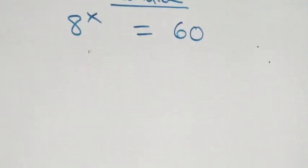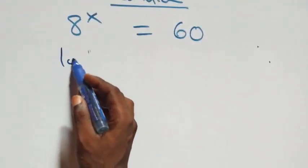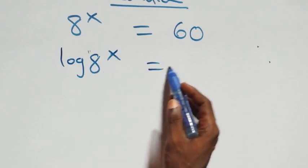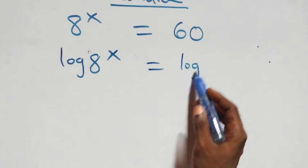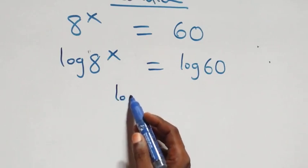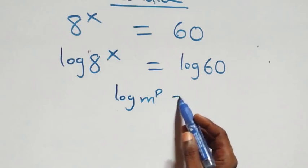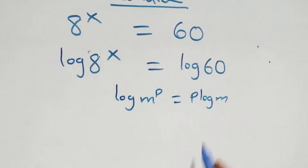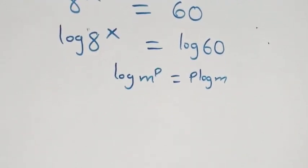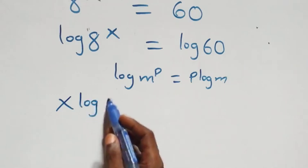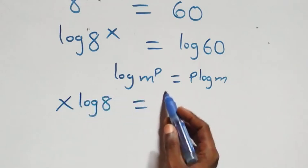From here we take the log on both sides, so we have log of eight raised to power x equals to log sixty. We apply the power law of logarithm: log m raised to power p is the same as p log m. This becomes x log eight equals to log sixty.